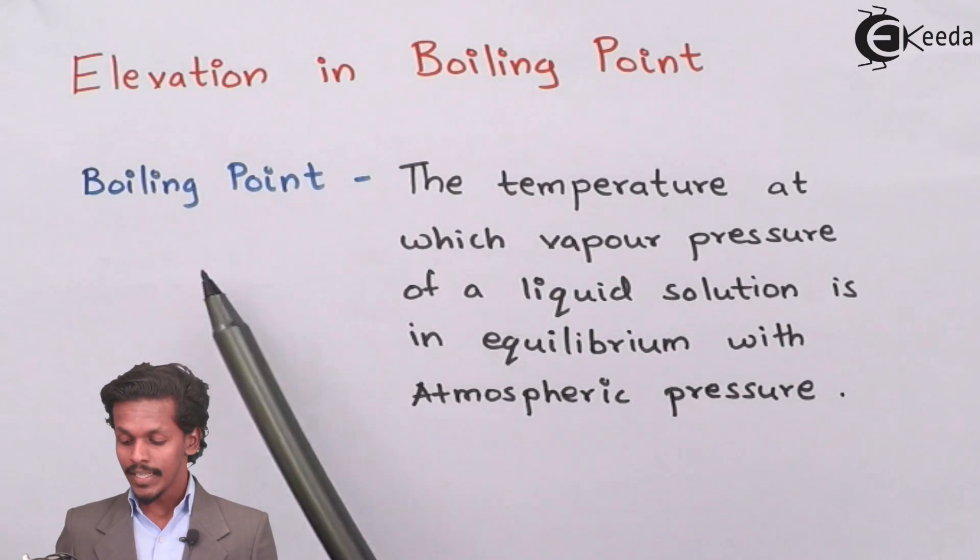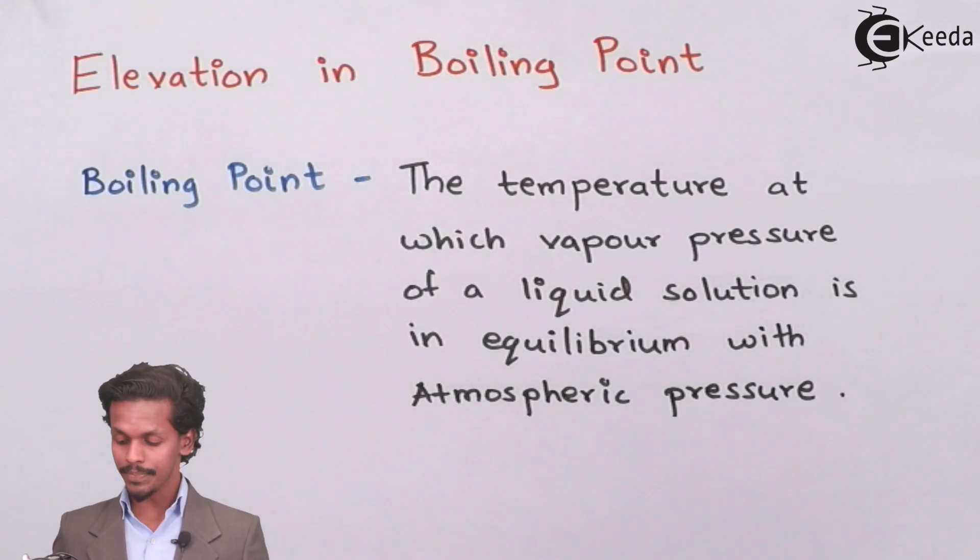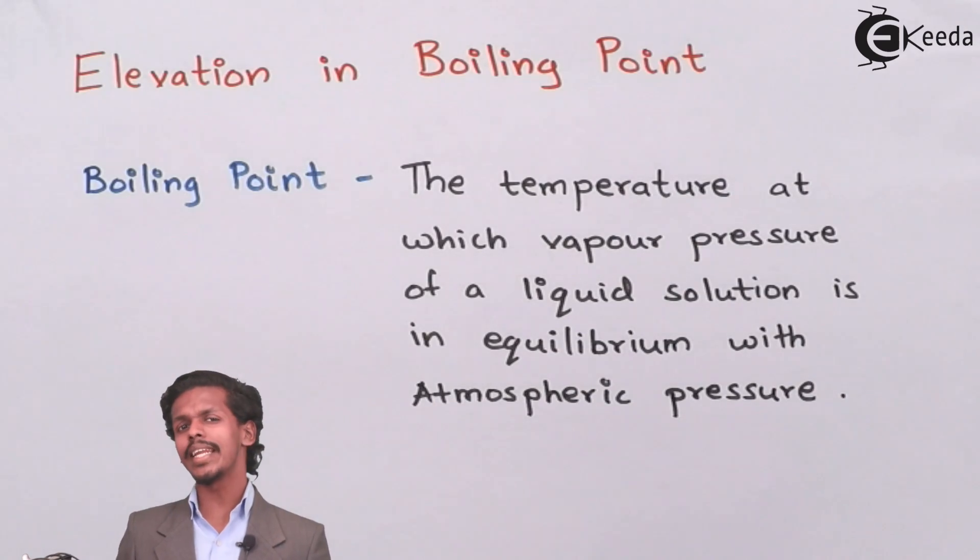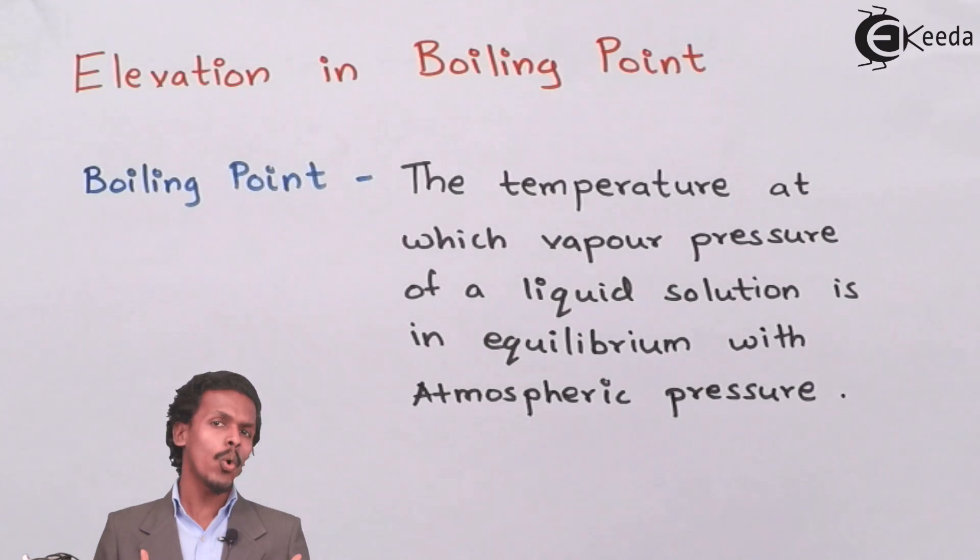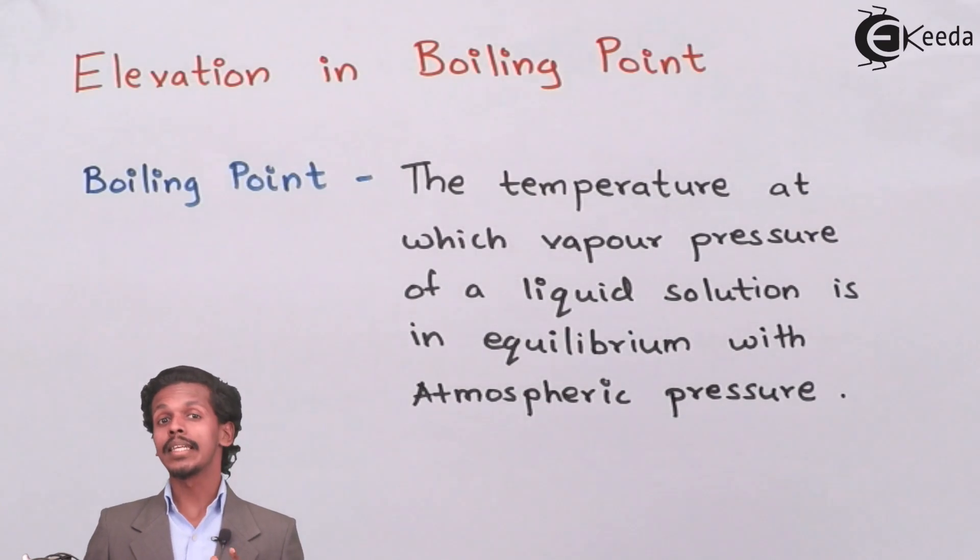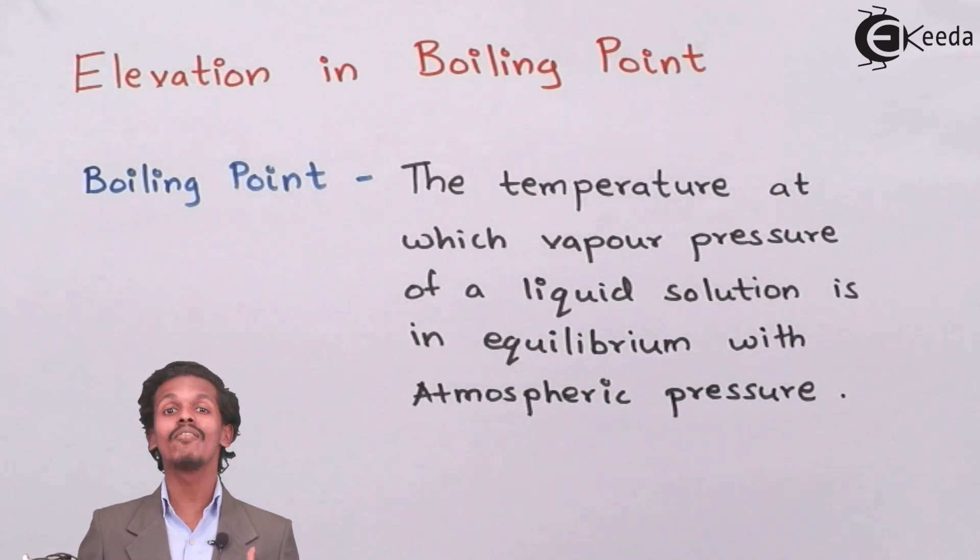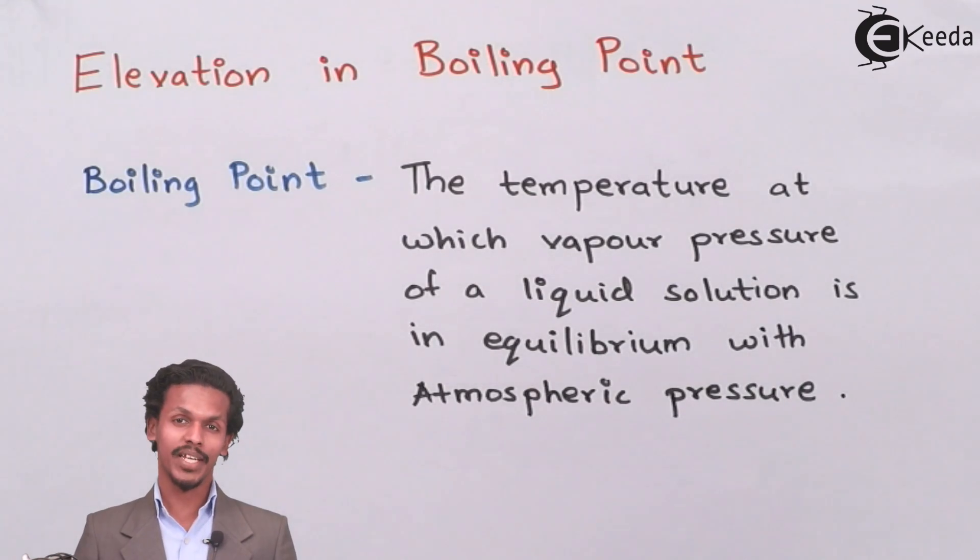Boiling point is the temperature at which the vapor pressure of a liquid solution is in equilibrium with atmospheric pressure. Boiling point is usually related to liquids and every liquid has its own boiling point. The temperature we should provide so that the vapor pressure exerted by the liquid equals one atmosphere - basically when it turns into gas - that temperature is known as the boiling point of the liquid.